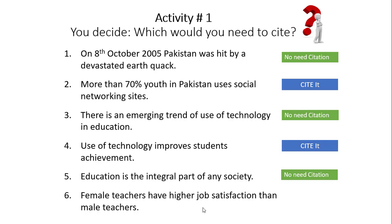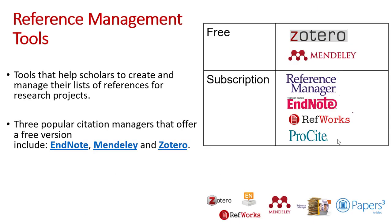This was a quick overview of the difference between referencing and citations. There are various reference management tools — some are free and some require a license. For example, Zotero and Mendeley are free software which can be used for reference management. These tools help scholars create and manage their list of references for research projects including theses. Three popular citation managers that offer free versions include EndNote, Mendeley, and Zotero. In the next video, I'll talk about how you can use Mendeley as a reference management tool.